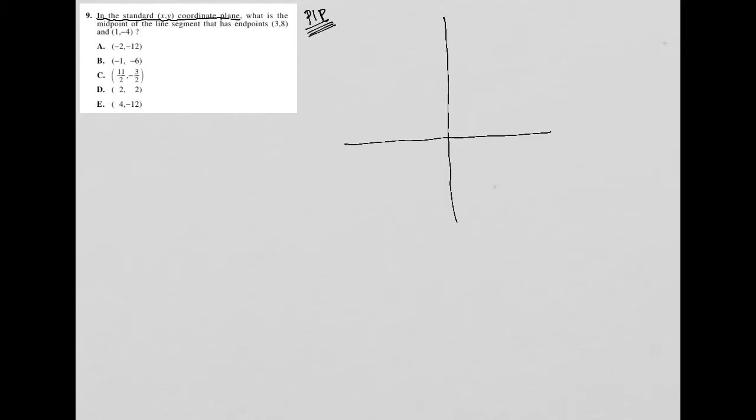So here's my X, Y plane. What is the midpoint of the line segment that has endpoints 3, 8? So I'm going to mark out 3 on my X axis and I'm going to do my best to make my Y axis markers equidistant to how I marked the 3. So that's 4, 5, 6, 7, 8. I know it's not going to be perfect, but I'm just doing my best to get it as perfect as I can because that makes the drawing more useful for me.